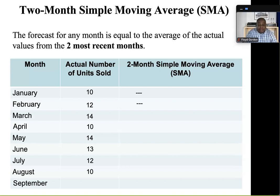However, when we look at March, we have the actual sales for the previous two months — February and January — so we simply average those two months. We pick up the 12 units from February plus the 10 units from January, divided by 2, and we get an average of 11. So our forecast for March is 11 units.